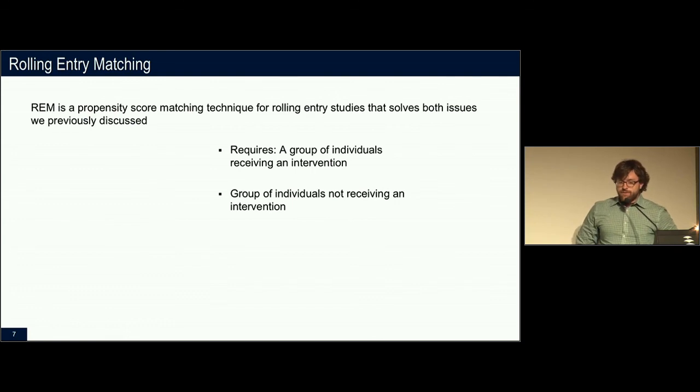Rolling entry matching, though, is a propensity score matching technique for these studies, these rolling entry studies. It requires a group of individuals that did the study or that did the treatment. That's going to be our treatment group. And it requires a group that did not receive the treatment. That's going to be the control group.